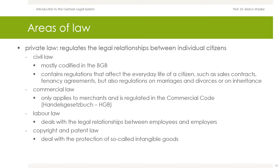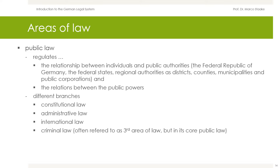Public law, on the one hand, regulates the relationships between individuals and public authorities — the Federal Republic of Germany, the Federal States, regional authorities like districts, counties, and municipalities, and public corporations. On the other hand, it regulates the relations between the public powers. This includes administrative law, constitutional law, and international law. In addition, public law also consists of criminal law.